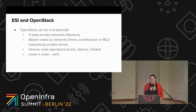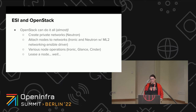These projects did what they had to do very well, but every piece of functionality had to be developed from scratch, making the code difficult to extend and maintain. At some point we took a step back and realized that all the functionality ESI required could be fulfilled through the use of OpenStack — almost. OpenStack allowed users to create private networks with Neutron, attach nodes to networks through Ironic and Neutron configured with the ML2 networking Ansible driver, control power state, do image-based provisioning, and boot from a volume with Ironic, Glance, and Cinder. It allowed almost everything except leasing a node.